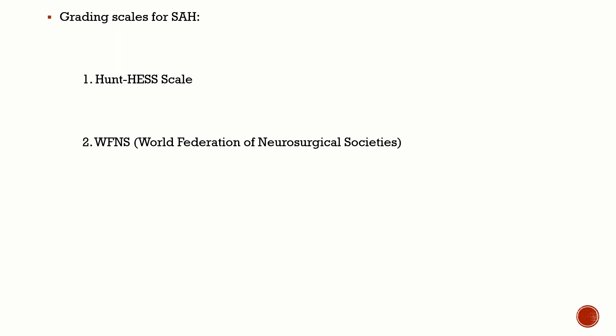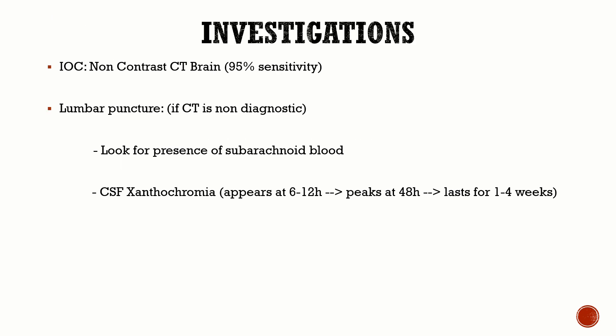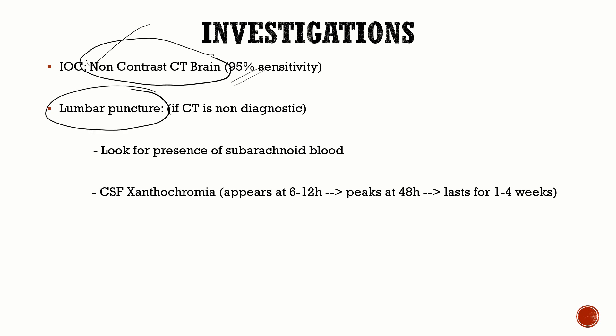For investigating SAH: once a patient presents with severe headache, LOC, and no focal neurological deficit, the first investigation is a non-contrast CT scan — just like for intraparenchymal hemorrhage. Non-contrast CT picks up 95% of SAH. If the SAH is very small and missed on CT but clinical suspicion remains high, you proceed to lumbar puncture. On LP, you look for subarachnoid blood and CSF xanthochromia.